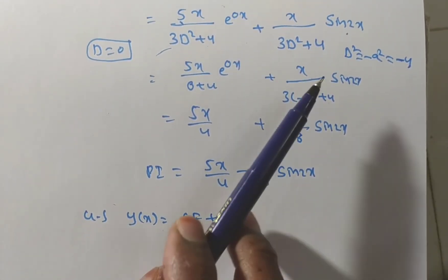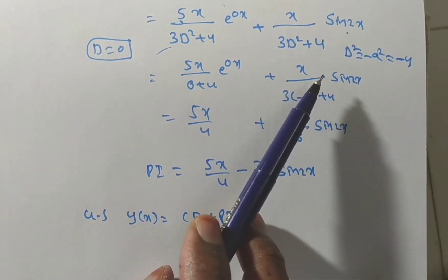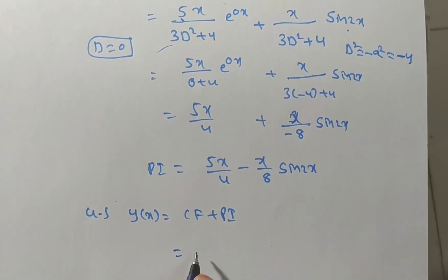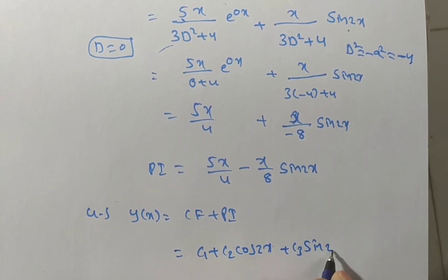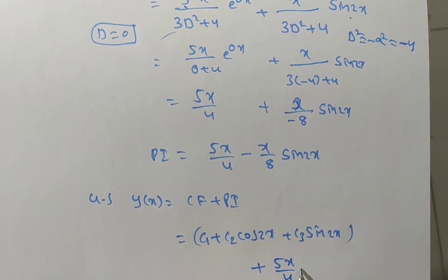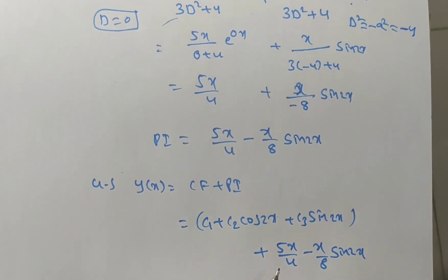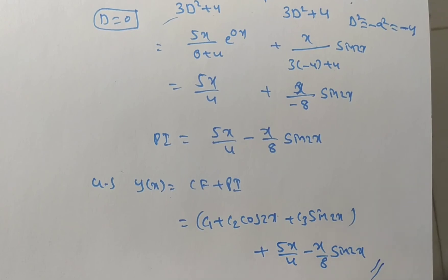The particular integral is 5x/4 − x/8·sin(2x). The general solution is y(x) = c₁ + c₂cos(2x) + c₃sin(2x) + 5x/4 − x/8·sin(2x). In the particular integral we do not write an arbitrary constant — that is already captured in the complementary function.